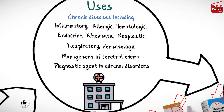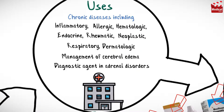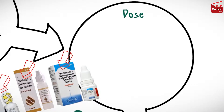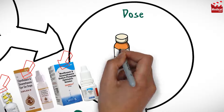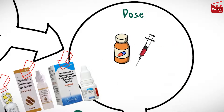Dosages of corticosteroids are variable and should be individualized according to the disease being treated and the response of the patient. The usual oral, intramuscular, and intravenous dose of dexamethasone for adults as an anti-inflammatory is 0.75 to 9 mg per day.